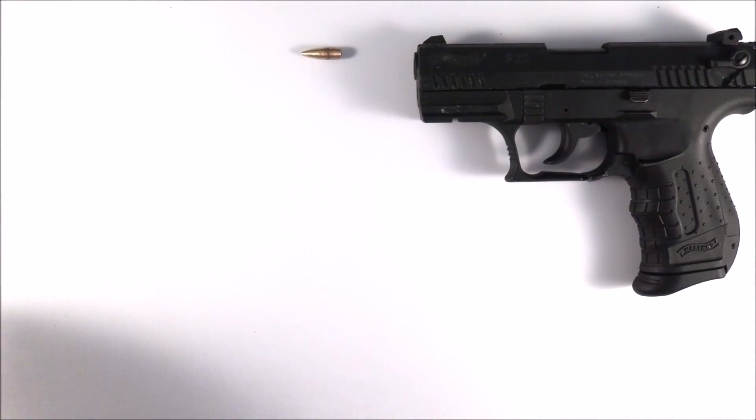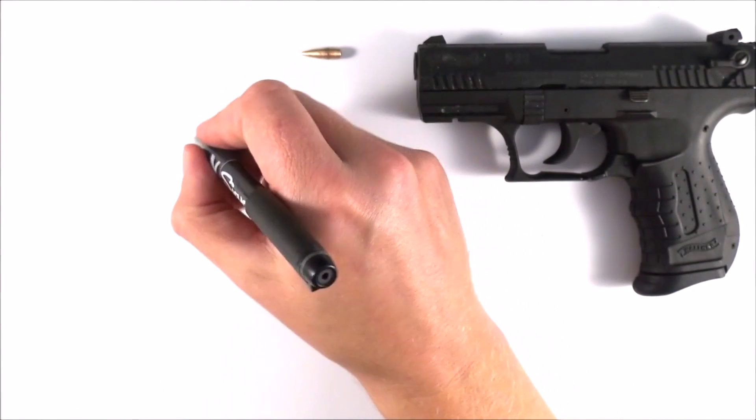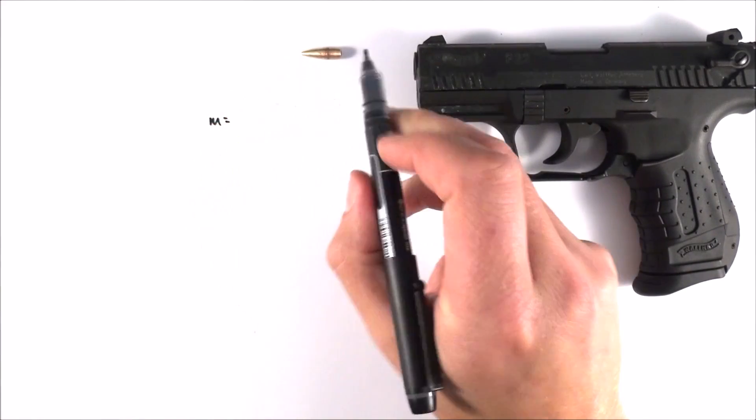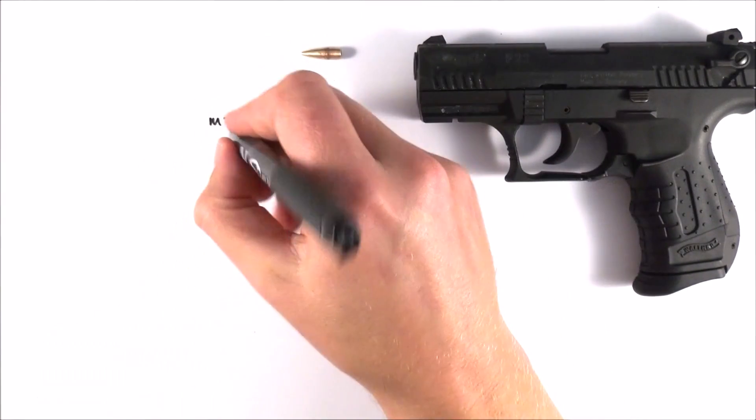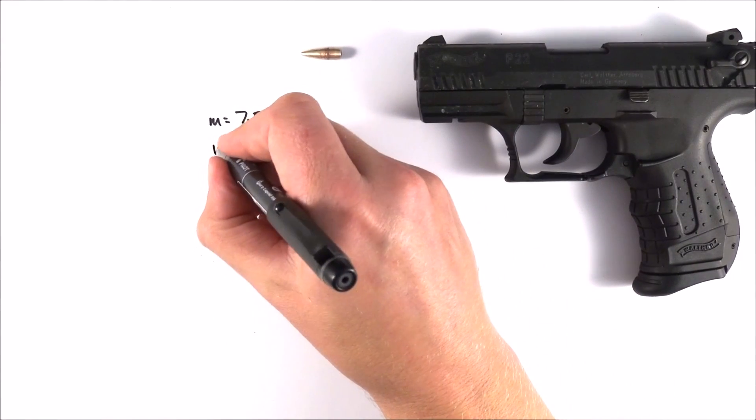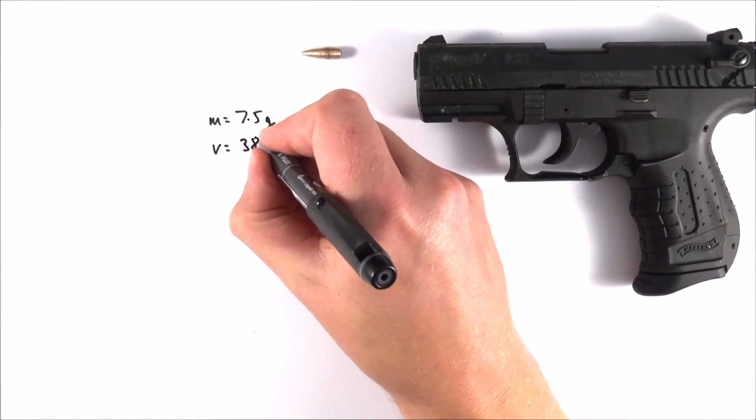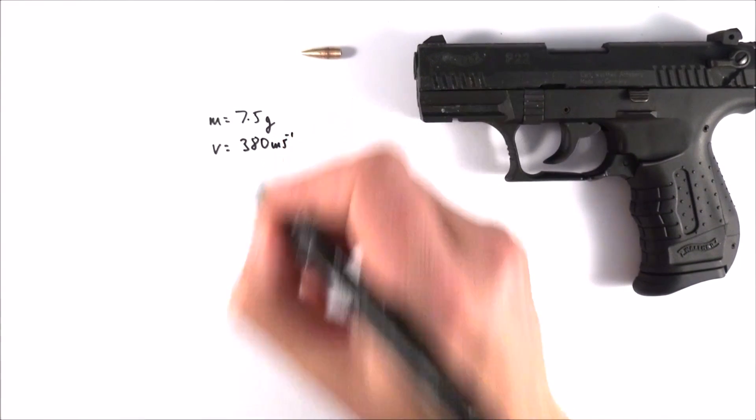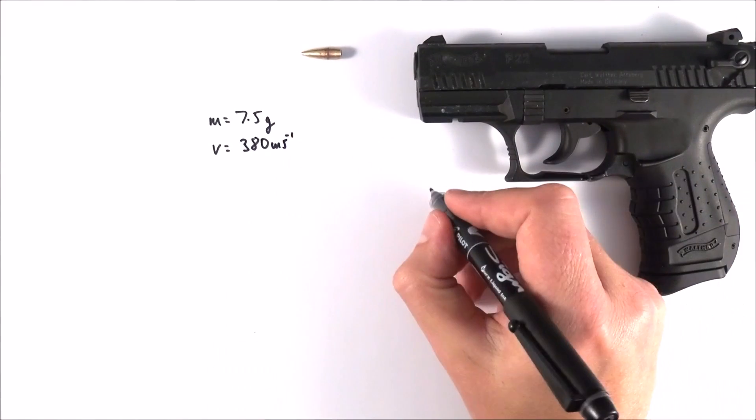Now we do need a bit of data to do this. So first of all, here's some data. The mass of one of these bullets is only about 7.5 grams, and they might come out with a velocity of maybe 380 meters per second.